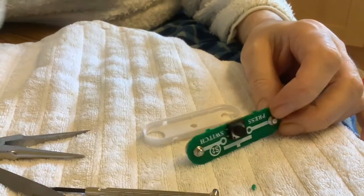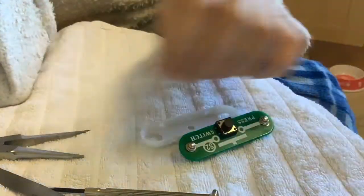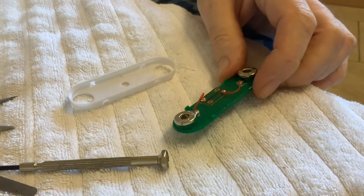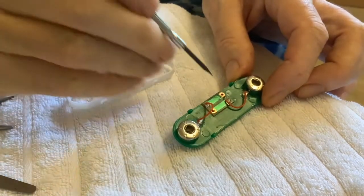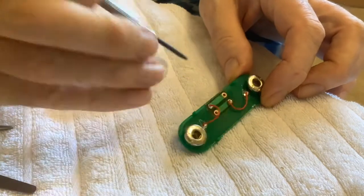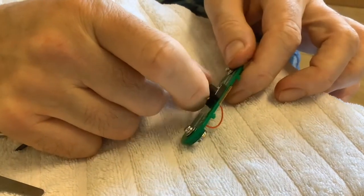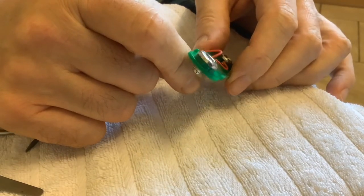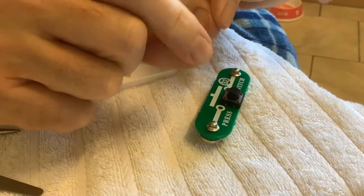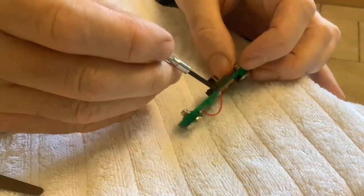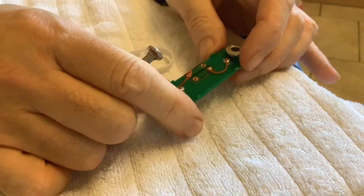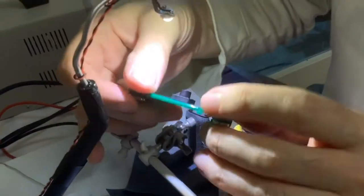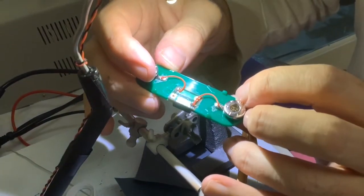If you want to replace that for the reed switch, what do you have to do? Desolder these two wires - that one and that one. The switch should just pull out. Then get the reed switch and bend the wires so they go through these holes, solder them in, and that's it.